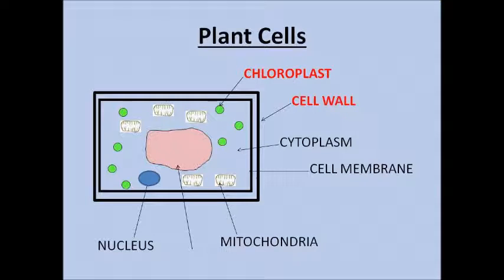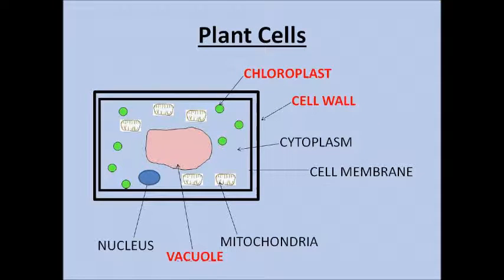The cell wall is made of a really strong substance called cellulose and it gives the plant cell strength, support and structure. The vacuole is full of cell sap and again it's for strength, support and structure.